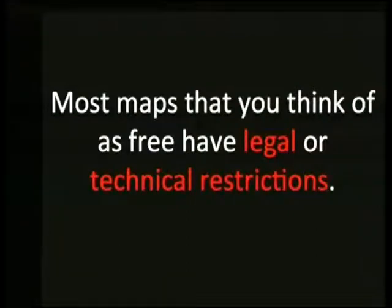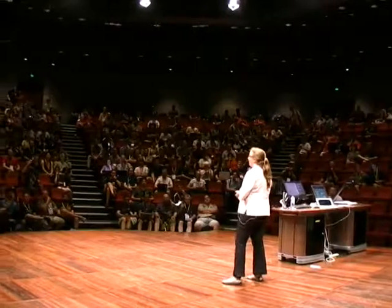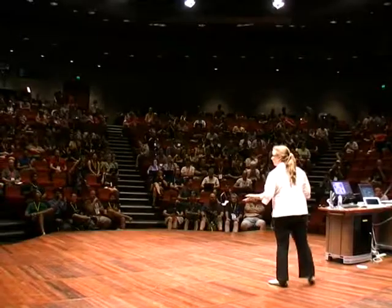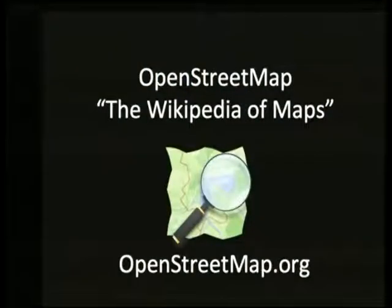Most maps that you probably use every day are either legally or technically not open and free. Did anyone use Google Maps to get here today? You can't download that data and then use it freely however you want. So we call OpenStreetMap the Wikipedia of maps. It's fairly simple — anyone with an account can sign up to add information, correct mistakes, and map as detailed as you want.